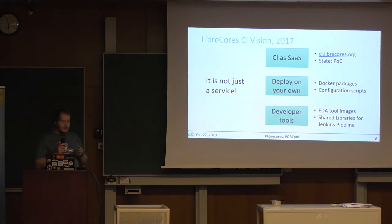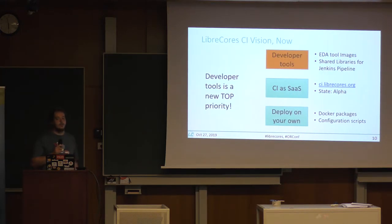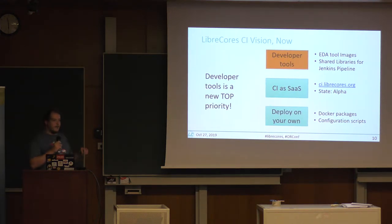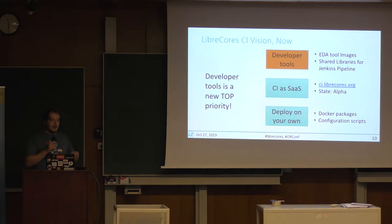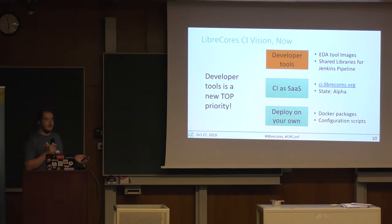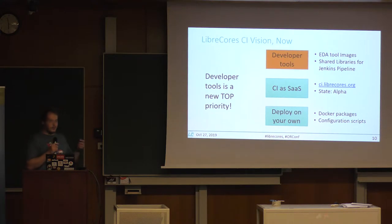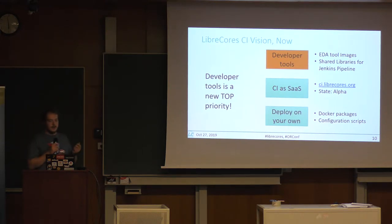Later, the vision changed — to putting the developer tools first. Instead of having SaaS, we wanted to have LibreCourse as a kind of solution for open source developers where you can take common components. If you take developer tool images, you can run them not only on Jenkins, not only on LibreCourse CI, but also on Travis, on GitLab, and whatever you use for your open source projects. That was the idea to provide reusable tools, and that's what we focused on after 2017.